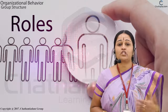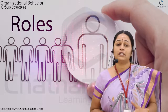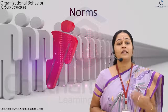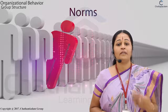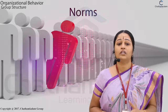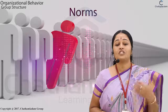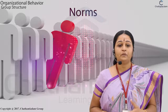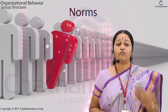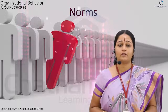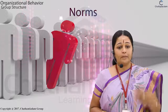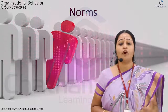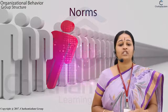The next structural variable under group is norms. Norms are acceptable standards of behavior within a group that are shared by the group members. These include norms pertaining to performance-related processes, appearance norms, norms pertaining to informal social arrangements, and norms that regulate the allocation of resources.